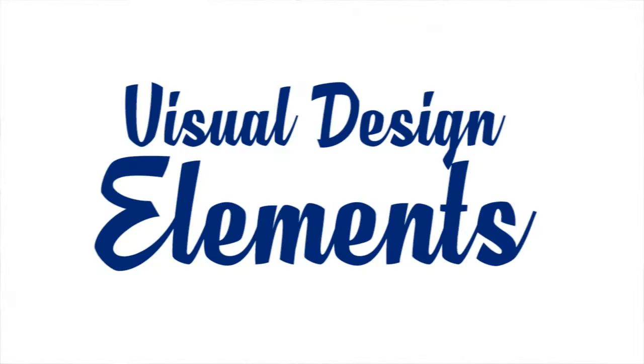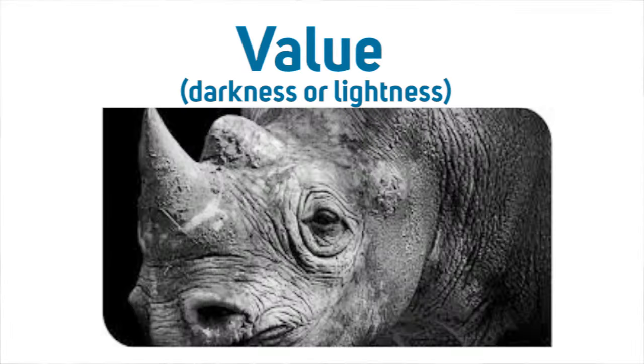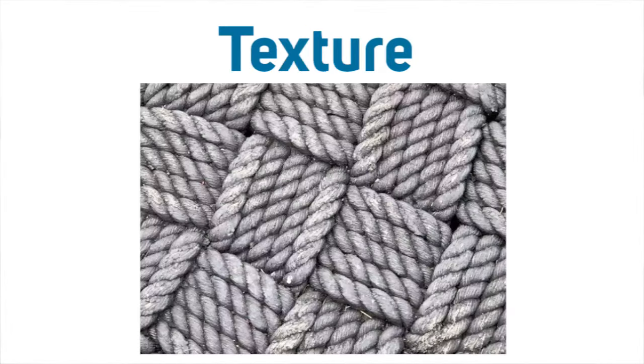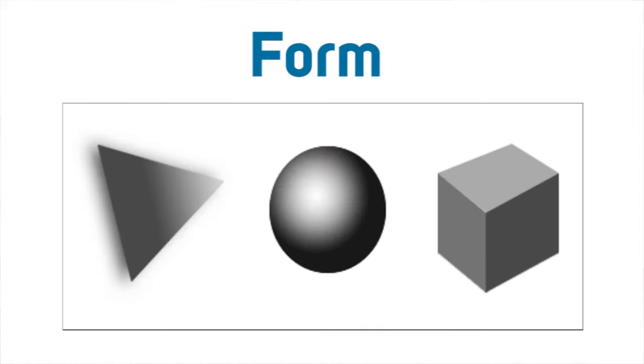How do we ensure that we are creating visual information correctly? We have the visual design elements and principles. A visual design needs to have these elements: lines, shape, value, texture, color, and form.